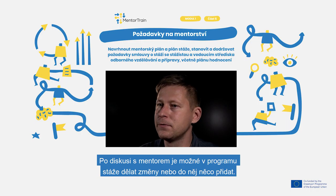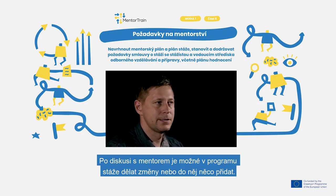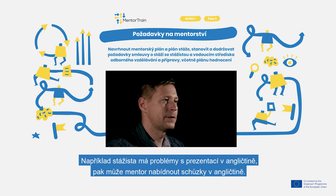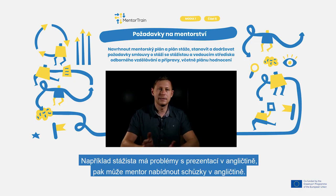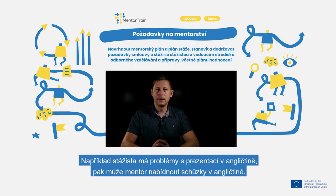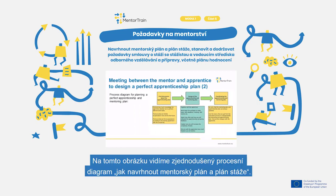Discussing this information with the mentor, they can make changes or add something to the apprenticeship program. For example, when the apprentice has problems making presentations in English, then the mentor can offer to have meetings in English. On this picture, we see a simplified process diagram of how to design a mentoring and apprenticeship plan.